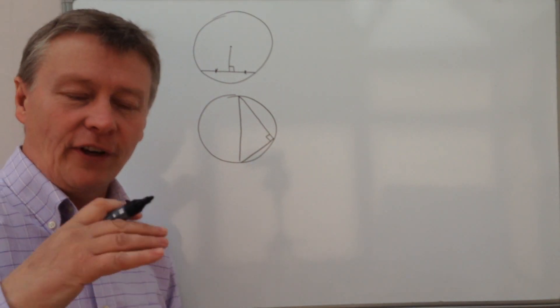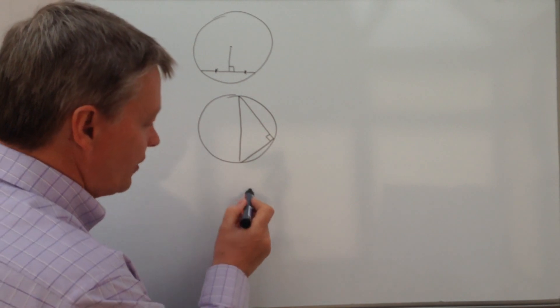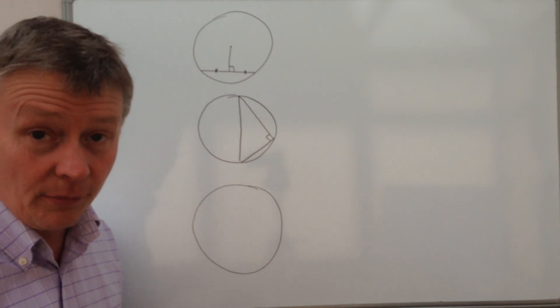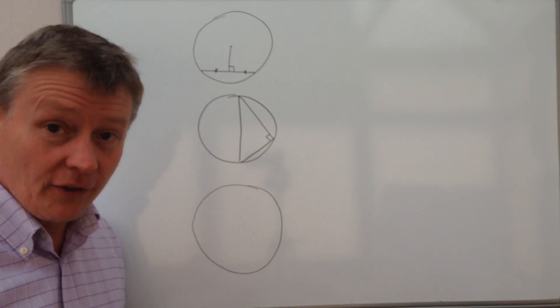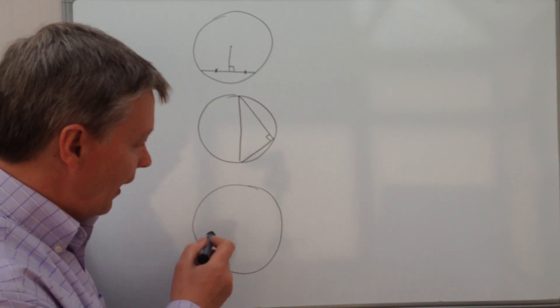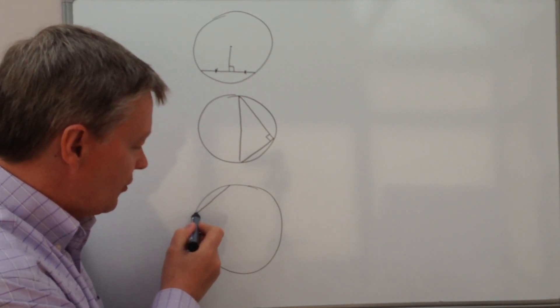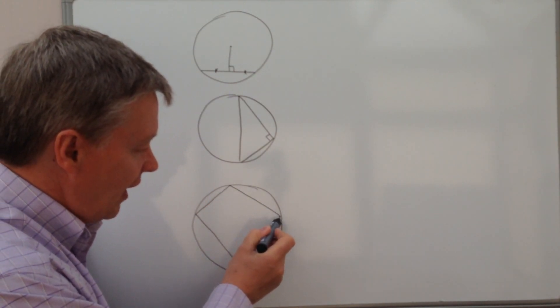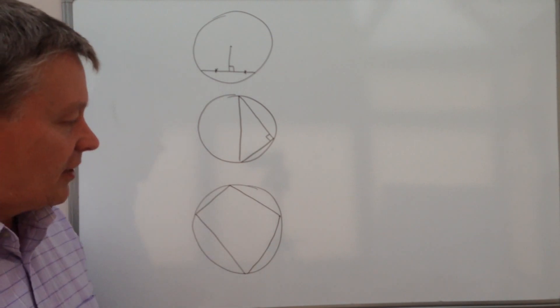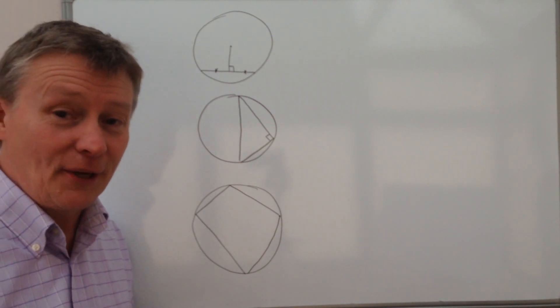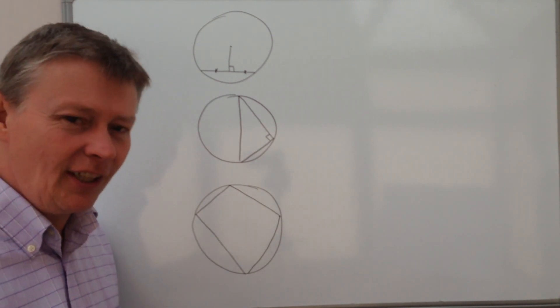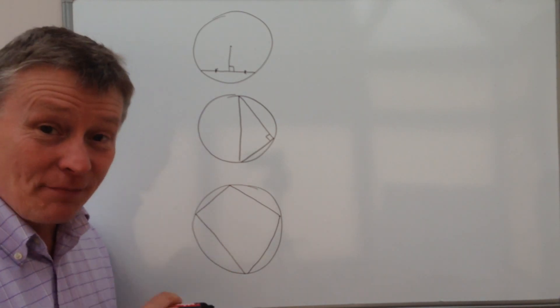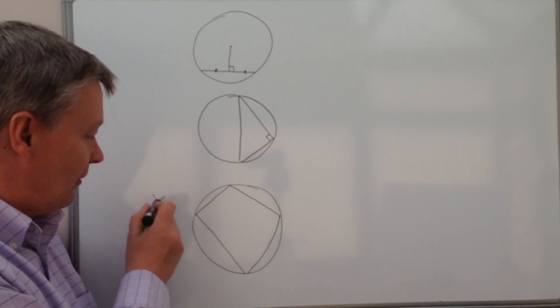The next circle theorem that you're going to use is one that does come up quite a lot, and actually I'm going to refer to it quite a lot in some of the videos of the questions, and that's all about a cyclic quadrilateral, which is basically a four-sided shape inside a circle. I really like that word.